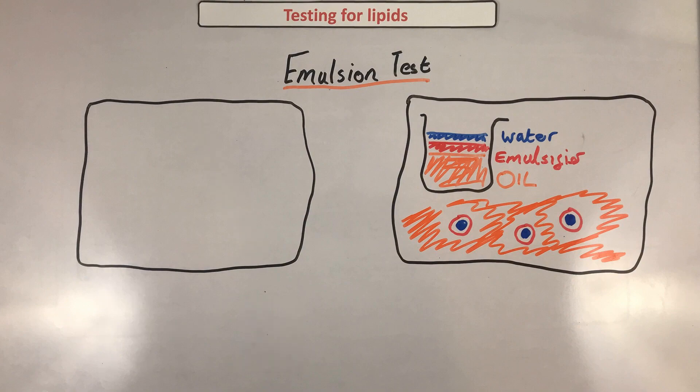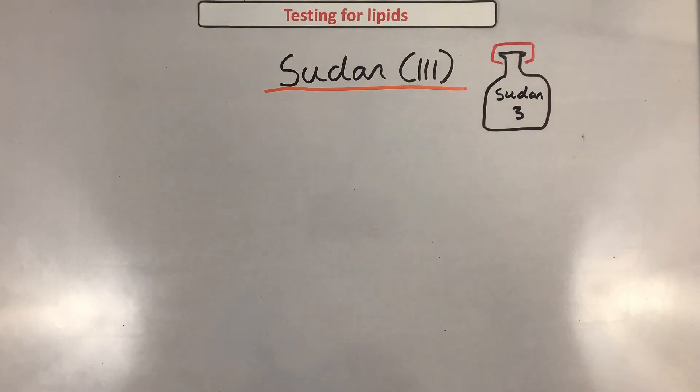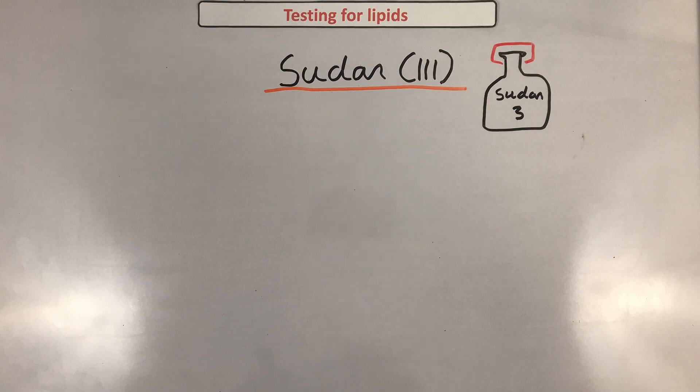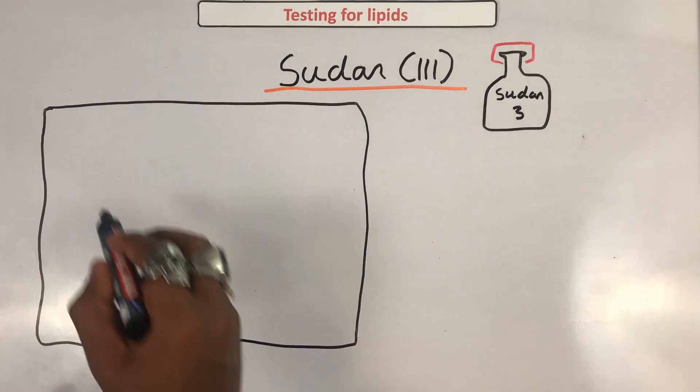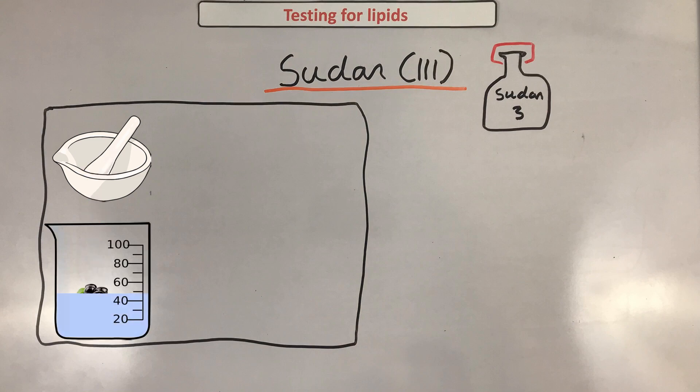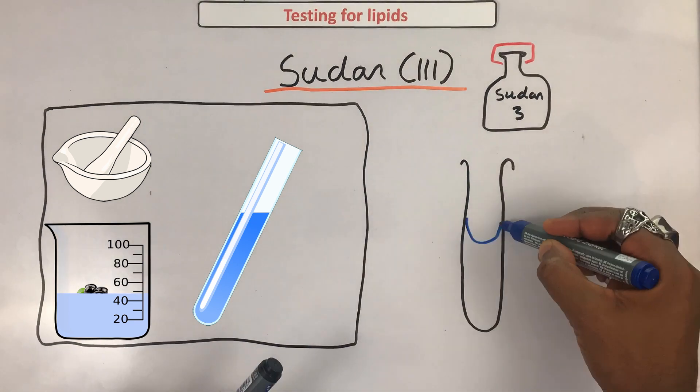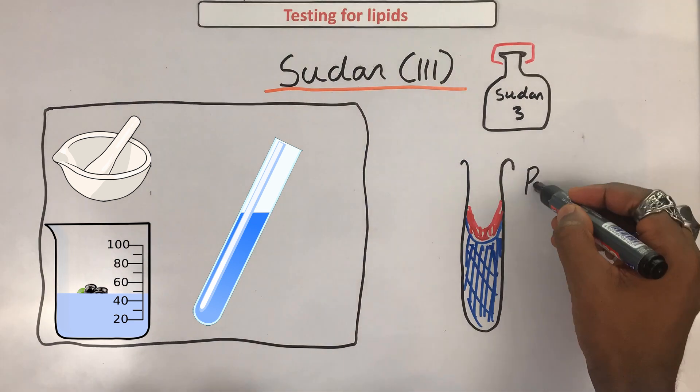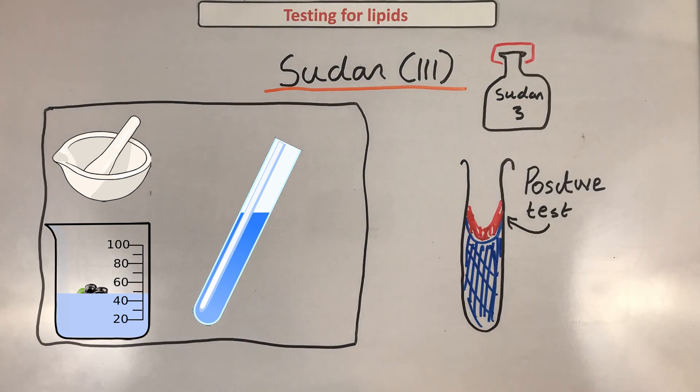The next test is the Sudan III test - that name is so dope, Sudan III sounds like a video game, a retro video game. Anyway, you use this when you need to crush your food. The first step: you crush your food obviously with the pestle and mortar. Number two, your food is then added to a beaker with some distilled water - you stir it again. Number three, you stir it so that some of the food is dissolved. Number four, you half fill your test tube with the dissolved solution. Number five, you add three drops of your Sudan III stain and mix it gently. If lipids are present, you will notice that there's a layer of red that floats to the top of your test tube. That is the positive test for lipids using the Sudan III.